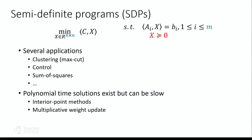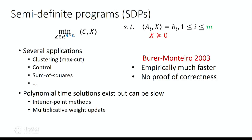Even though these are polynomial time methods, they have problems scaling to extremely large problem sizes in practice. In order to cope with this issue, Burer and Monteiro in 2003 proposed a new approach to solving these problems. They demonstrated that their approach is empirically very good, performing well on a large class of problems, and they show interesting results about their approach. However, they do not manage to show a general proof of correctness on general semidefinite programs.